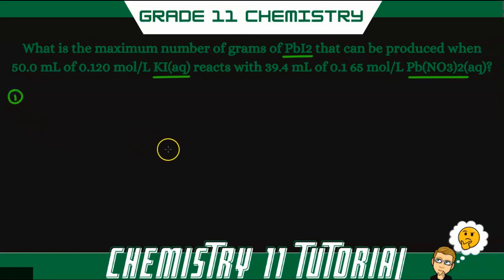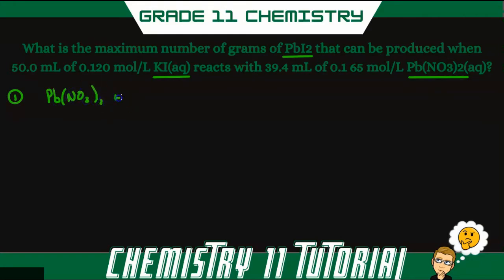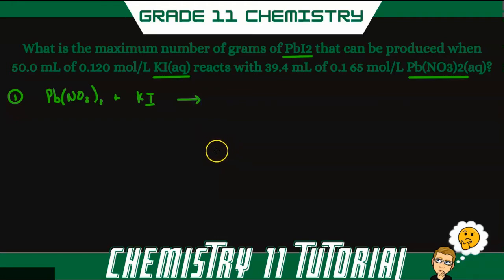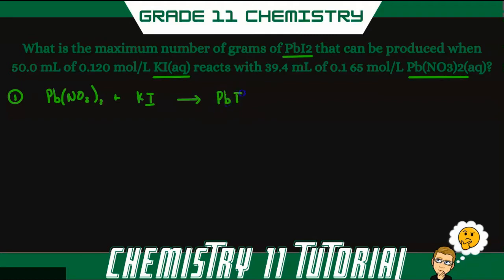To start, our first step is to write a balanced chemical equation. Our reactants are lead nitrate and potassium iodide. This is a double displacement reaction, so iodide and nitrate will switch places, giving us lead iodide (PbI₂) and potassium nitrate (KNO₃) as our products.